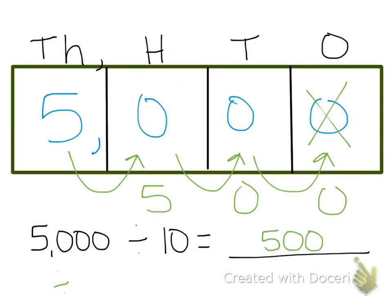When we're dividing by 10, we're moving everything to the right, and we're going to take away a 0. So those are the patterns of 10 in our place value.